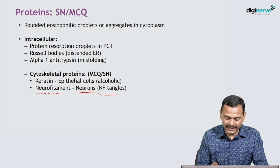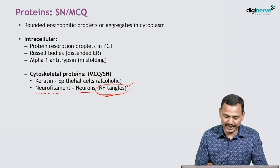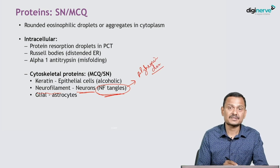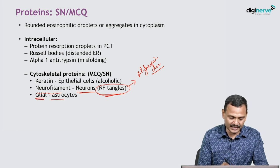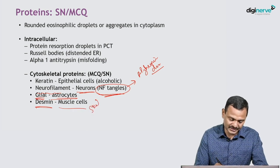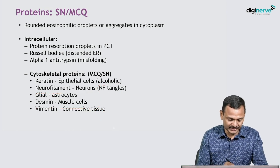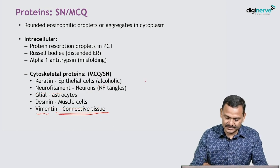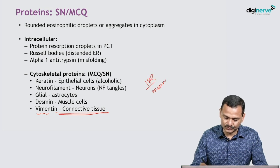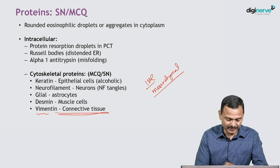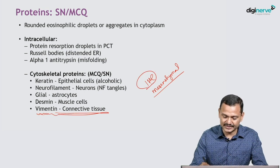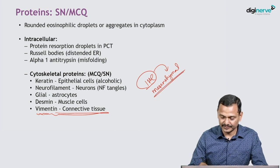Neurofilaments are part of neurons and can be found in neurofibrillary tangles seen in Alzheimer's disease. Glial cytoskeletal proteins are seen in astrocytes. Desmin is seen in muscle cells — skeletal or smooth muscle — as an intermediate filament. The last is vimentin, which serves as an IHC marker for mesenchymal tissue. We can perform IHC against vimentin to identify mesenchymal tissue.